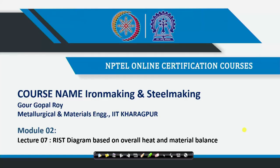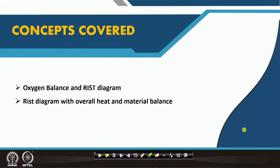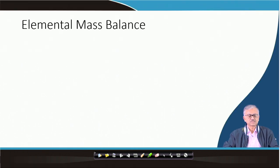Welcome. This is lecture 2 of Heat and Material Balance. In this lecture we will discuss the Rist diagram based on overall heat and material balance in the blast furnace. We will first develop the Rist diagram based on only oxygen balance, that is the material balance, and later we will also add the overall heat balance of the blast furnace.